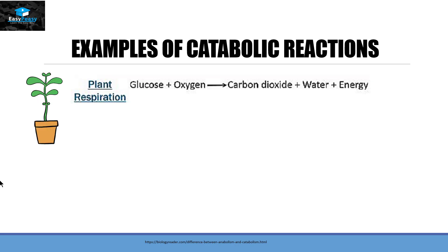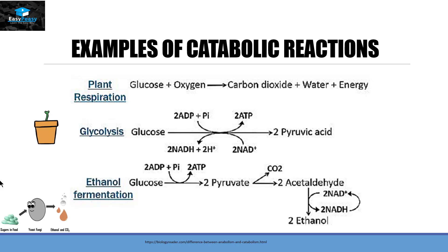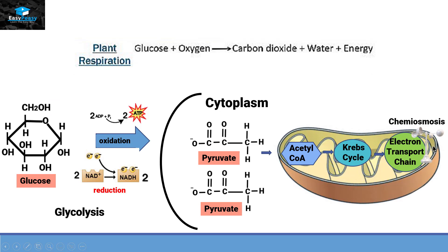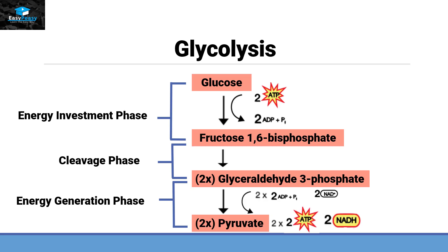Catabolic reactions include respiration, in which glucose plus oxygen converts into carbon dioxide, water, and energy. They also include glycolysis, which is the first step of cellular respiration, and ethanol fermentation. These reactions are not as simple as they seem. In plant respiration, for example, there are several different types of reactions. Glycolysis itself has many further steps — at some points it takes energy to proceed, but in the end it releases more energy, so the net ATP makes it a catabolic reaction.